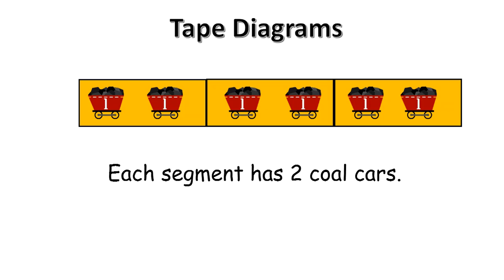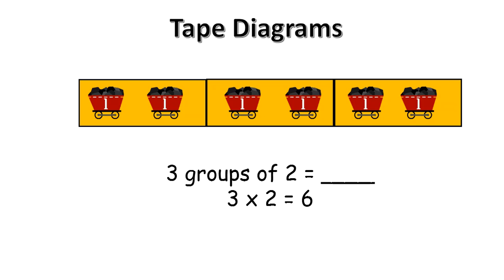Each segment has two coal cars. To represent this for multiplication we could say we have three groups of two coal cars. Three groups of two equals our unknown product. In multiplication we would say three times two equals six.